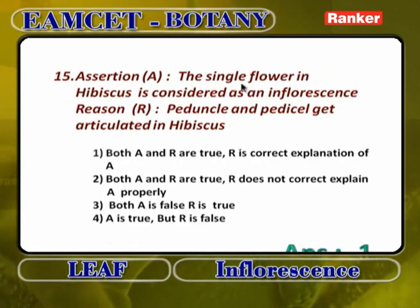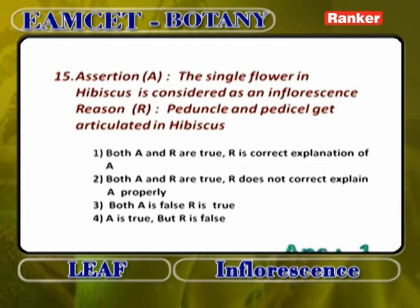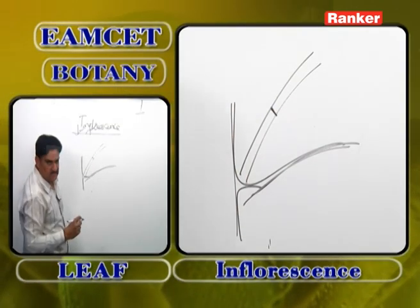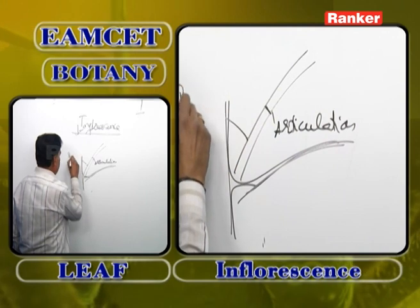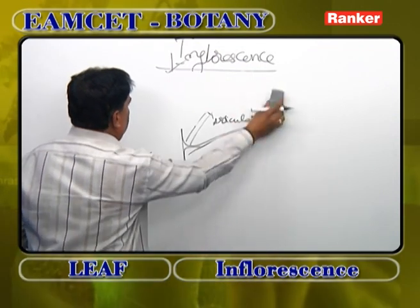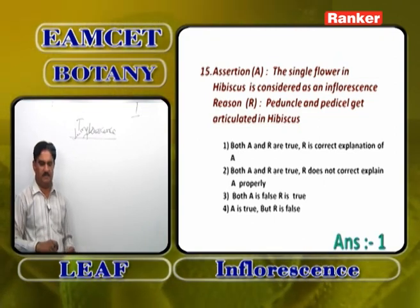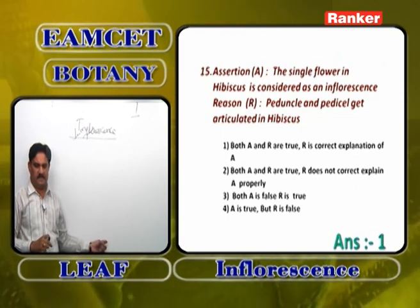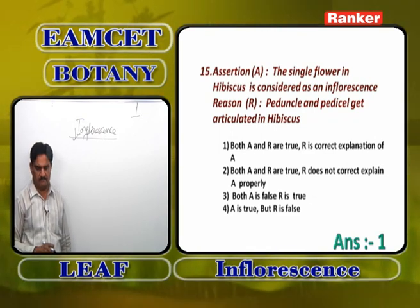Assertion: the single flower in hibiscus is considered an inflorescence. Reason: peduncle and pedicell get articulated in hibiscus. In hibiscus, the inflorescence is axillary solitary cyme. The stalk shows a joint called articulation — the portion below is the peduncle, the portion above is the pedicell. The single flower in hibiscus is an inflorescence — correct. Both A and R are correct, and R is the correct explanation of A.